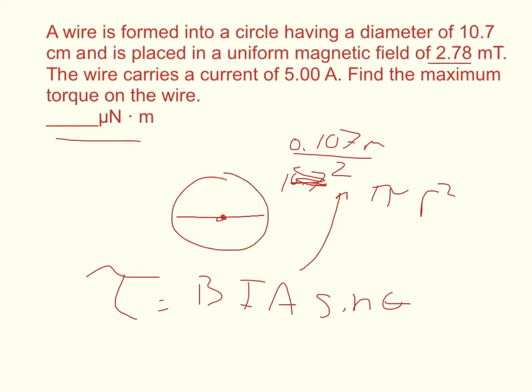The magnetic field is 2.78 milli-Tesla. So I'll convert that to Tesla, 0.00278. Then I'll square this radius quantity and get 0.011449.